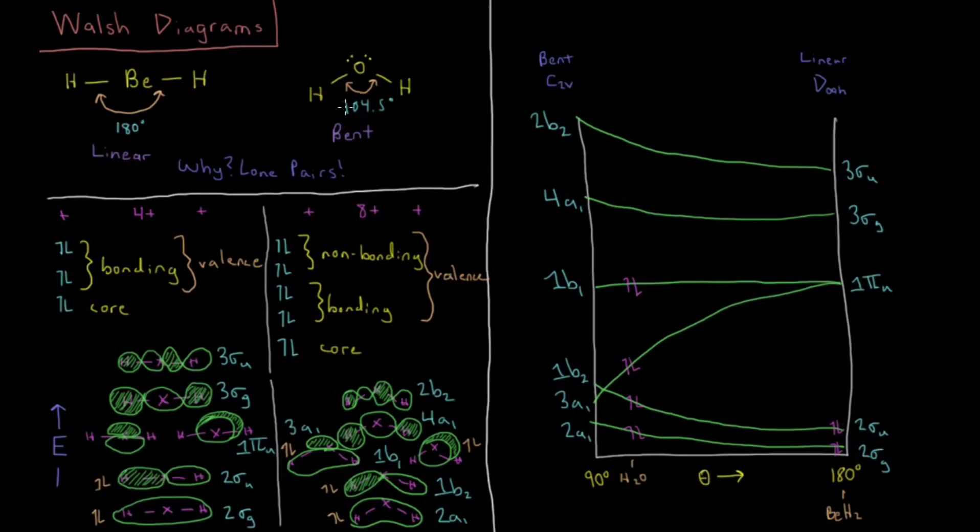In this case, we're scanning over the angle theta, which describes the angle between these two bonds, and I assume you either have to do it at a fixed bond length as you scan or at the optimal bond length for every given angle as you go. Either way, you end up with a Walsh diagram with the energies of all these orbitals as a function of that intermolecular coordinate.